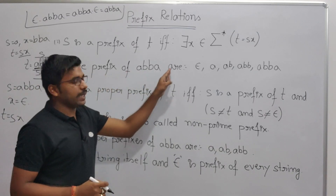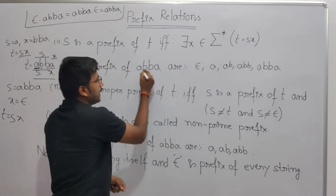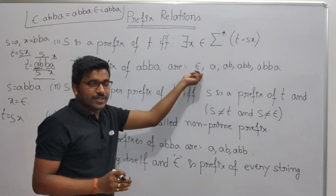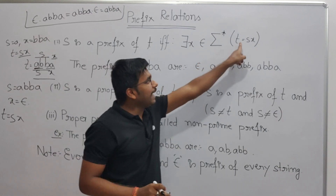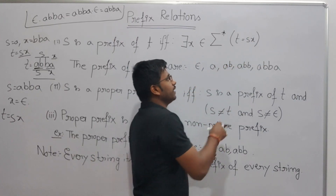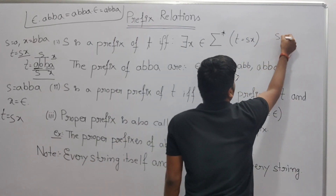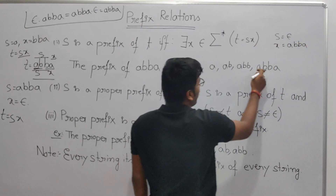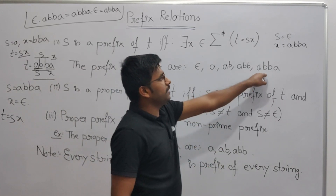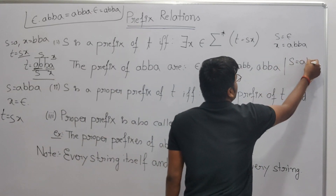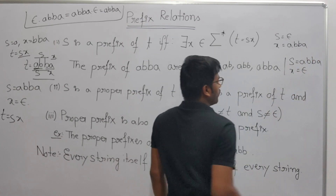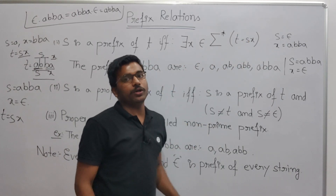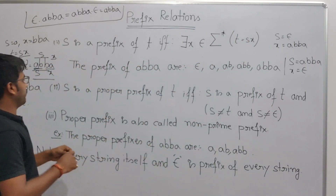So the prefixes of abba are: epsilon, a, ab, abb, abba. All these strings appear at the beginning of the string. Epsilon is included because when s is epsilon we take x as the whole string. And the full string abba is included because we take s as abba and x as epsilon. The beginning part is always your prefix — as the name suggests.